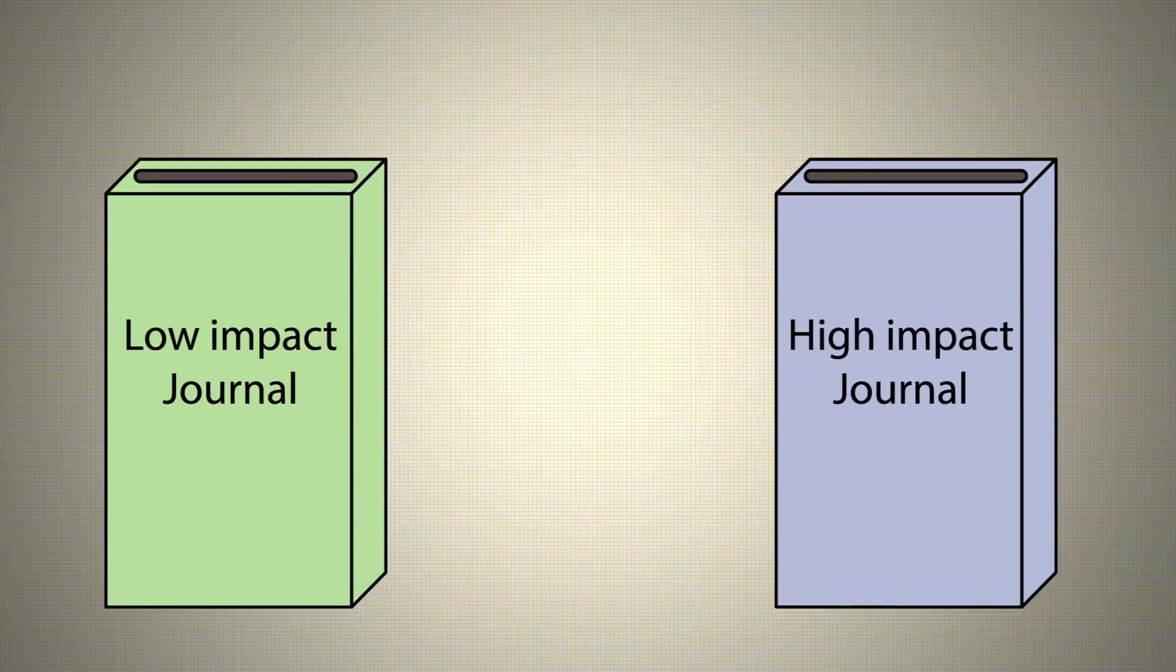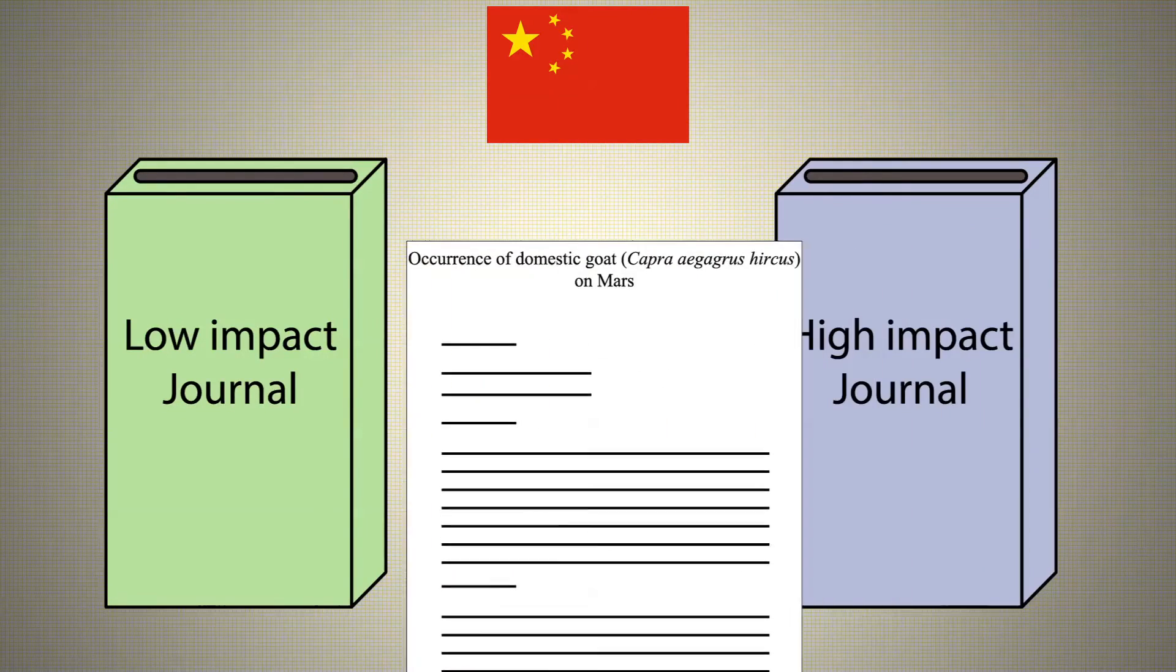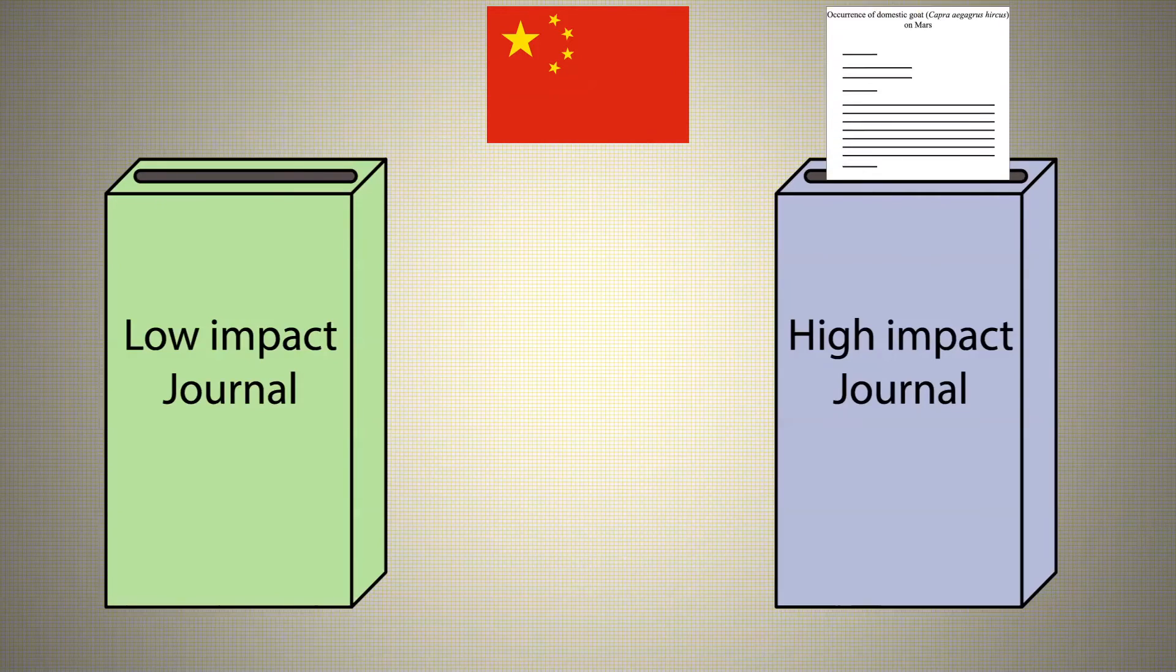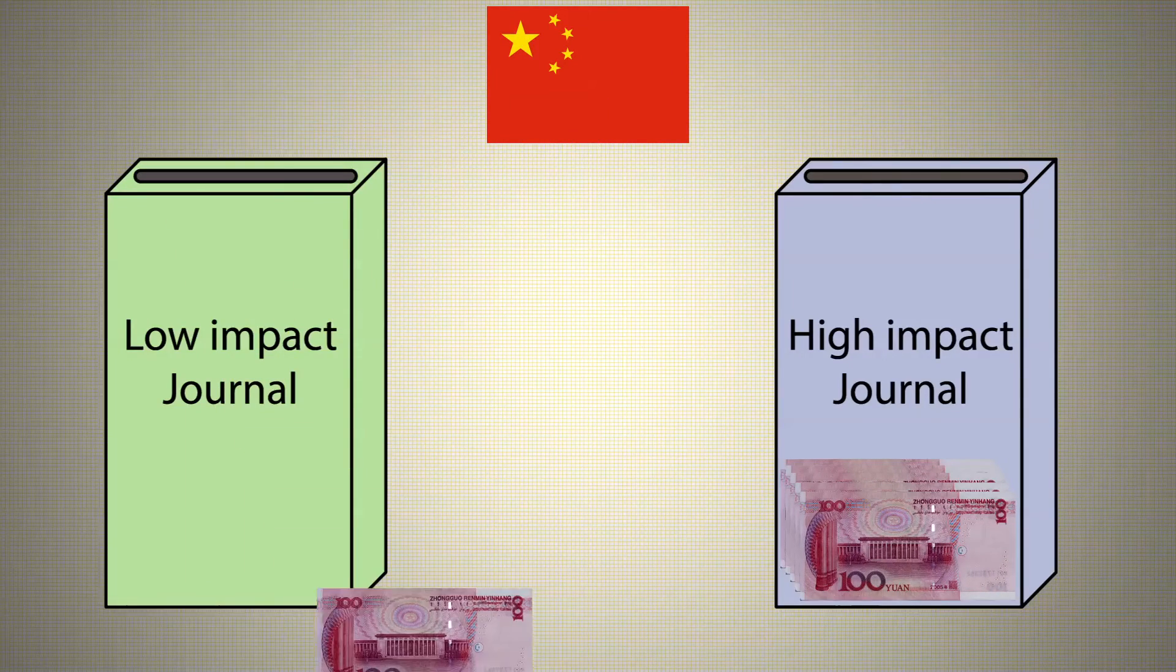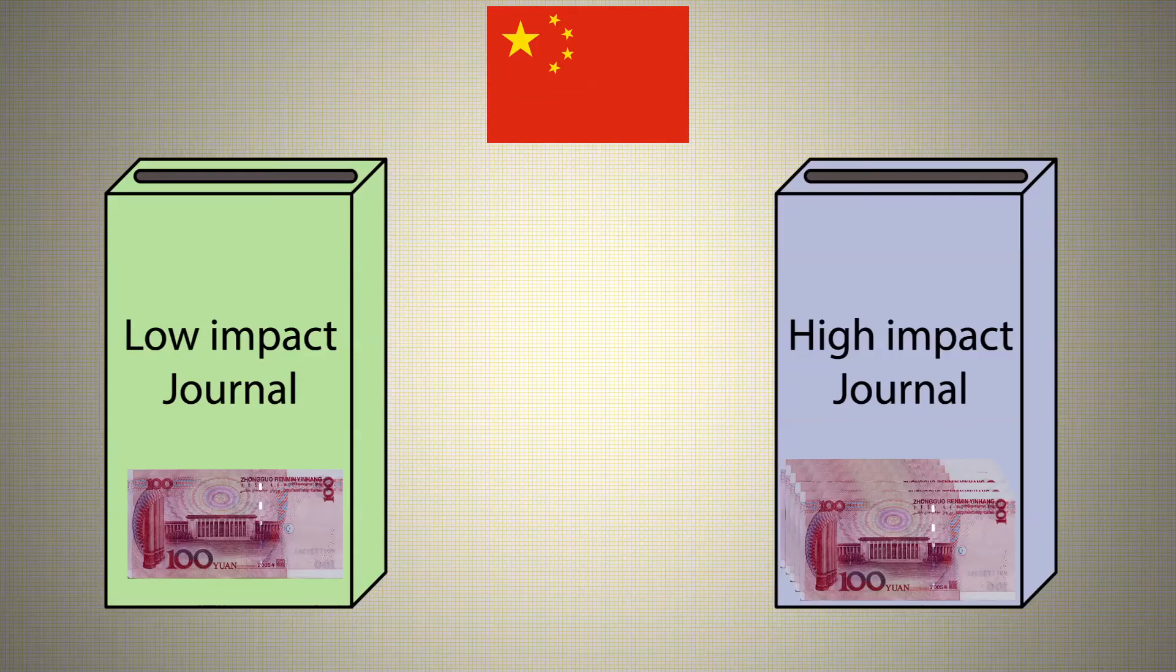One example where this is a particular problem is in China. Some government bodies give out funding awards when a paper is published, and the size of this award depends on the impact factor of the journal it is published in. A monetary award for impact factor will undoubtedly attract poorer practices to the top journals. And although peer reviews should pick these up, some will slip through the gaps.